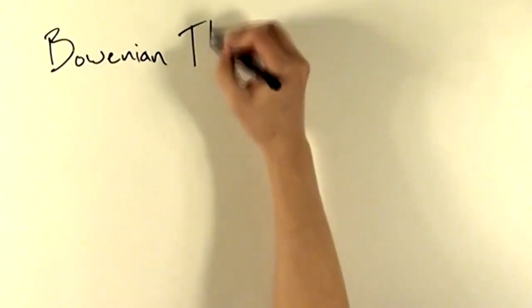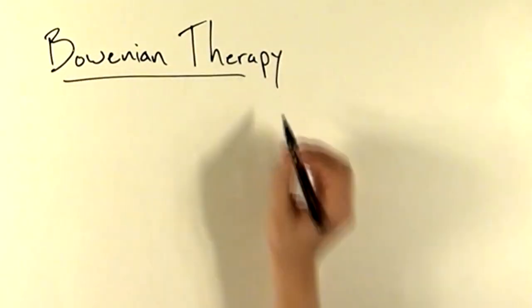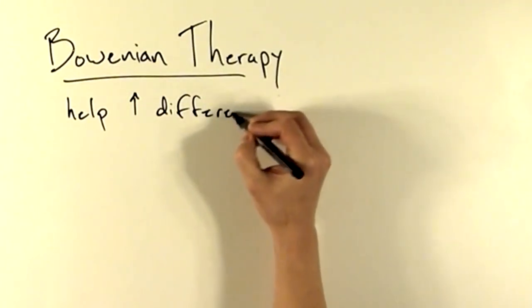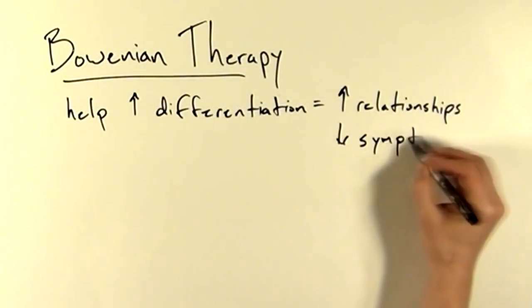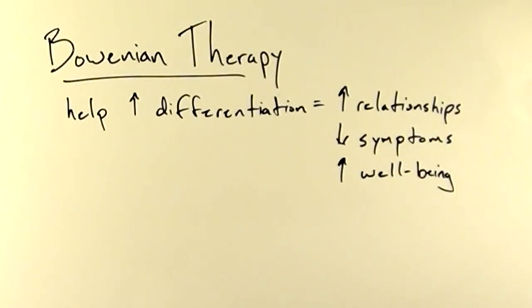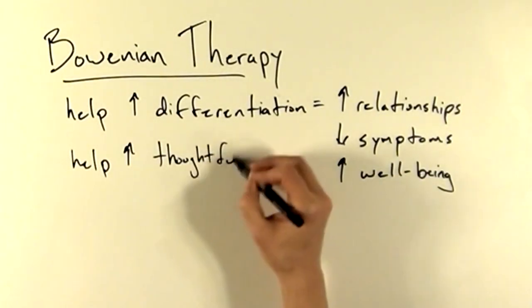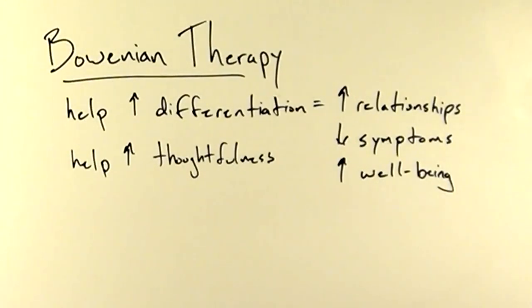So what do Bowenian therapists do? In a nutshell, Bowenian therapists try to help their clients act in a more differentiated manner, which is thought to result in better relationships, reduce symptoms, and greater well-being. To this end, they help people to be thoughtful in the face of stress rather than reacting without thinking.